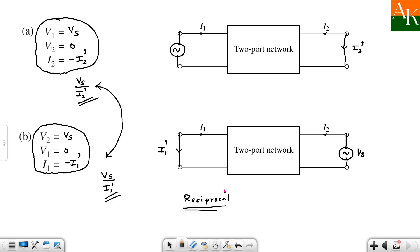The reciprocal conditions can be derived in terms of Z parameters, Y parameters, transmission parameters which are also known as ABCD parameters, and hybrid parameters. We will always find these two ratios, equate them, and then find out the condition. Thank you.